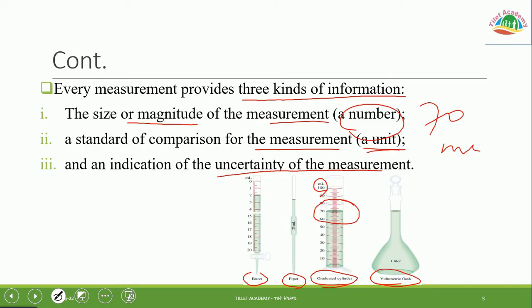The third piece of information from a measurement is the uncertainty of the measurement. A link will be provided in the description box for a separate video covering measurement uncertainty in detail.